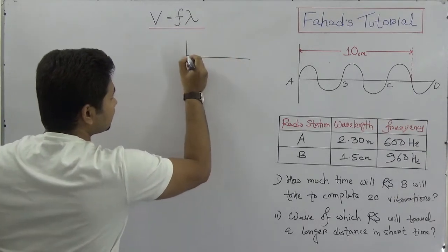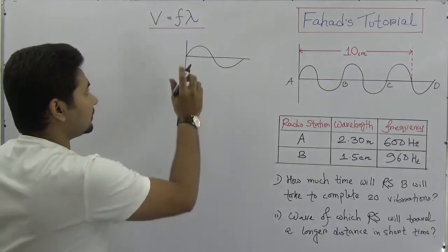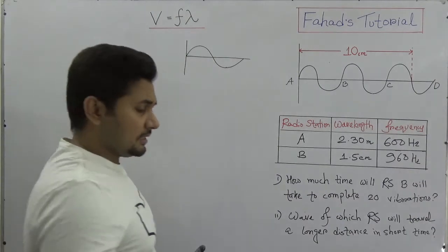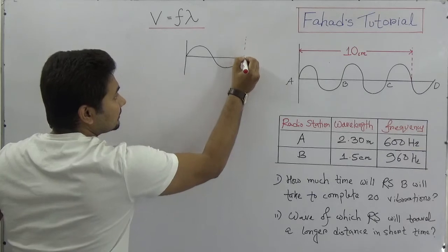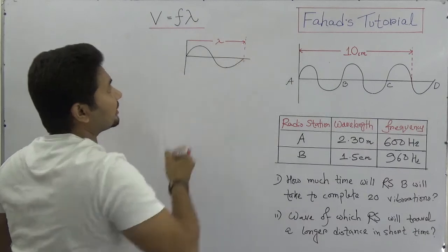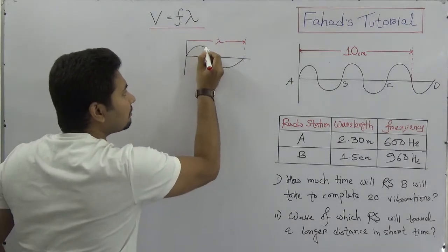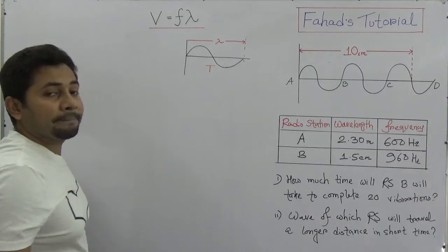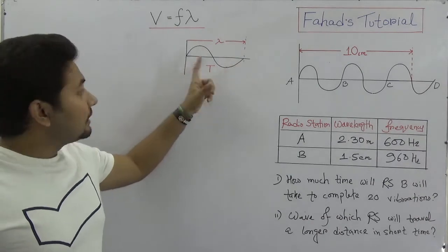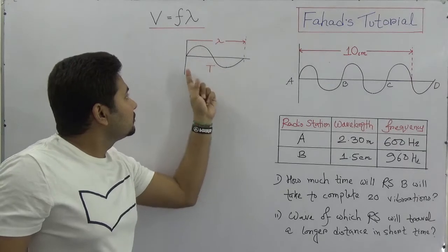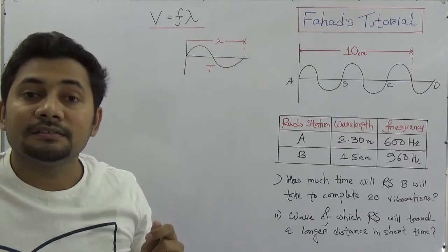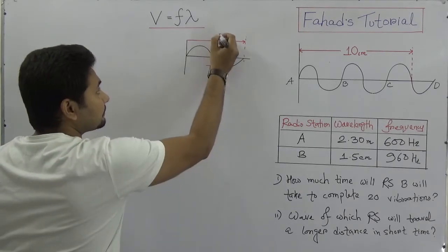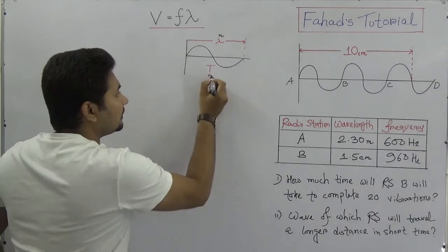Suppose this is a transverse wave. All these waves have a crest and a trough, and for one complete vibration the wave travels some distance. That distance is lambda, the wavelength. The time required to complete one full vibration is the time period T. So for one complete vibration: the distance is the wavelength and the time required to travel that path is the time period. The unit of lambda is meters and the unit of time period is seconds.